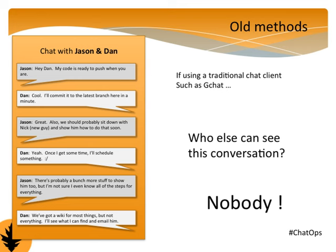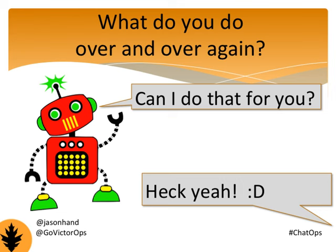When we take a closer look at this older method of chat, it's important to note that both conversations are just between myself and Dan. No one else can see them. In DevOps discussions, the term 'silo' comes up all the time. In this case, Dan and I are siloing badly because no one else gets to see the conversation. We're not sharing and we're not being transparent with the rest of our team. So let's return to that question: what are you or your team doing over and over again, and is there something we can start automating with a chatbot?